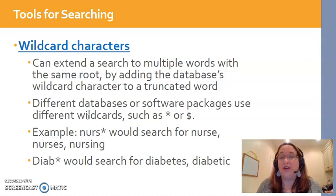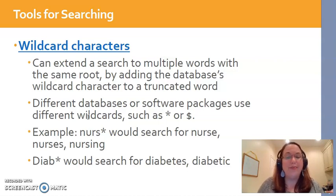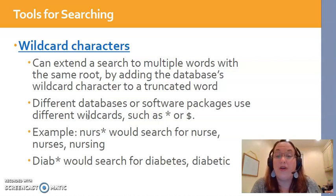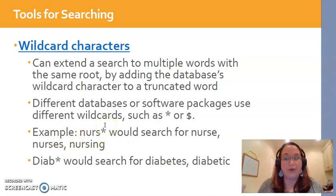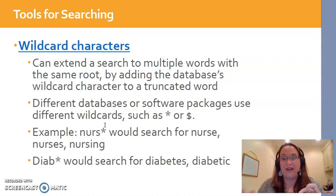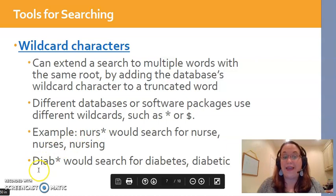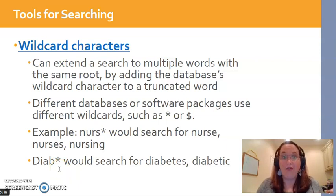Another tool for searching is called truncation, or the use of wildcard characters. Sometimes searching is trial and error — you have to play with keywords until you figure out what works best. But wildcards can give you a better output for your search. For example, typing NURS with an asterisk searches for nurse, nurses, and nursing — anything starting with NURS with any suffix. Similarly, DIAB would capture diabetes and diabetic. You can see how that can be helpful depending on your topic and the types of words you're looking up.